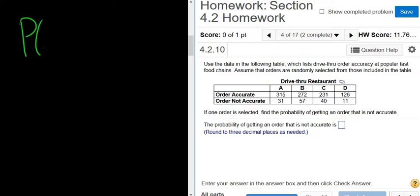Let's just directly do the problem. We want the probability of an order that is not accurate. It should be pretty straightforward. This is a fraction, and on the bottom we have the total number of orders. To figure that out, we have to add up all of these numbers.